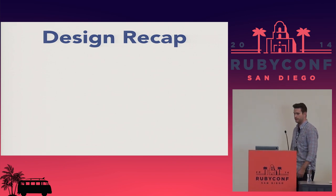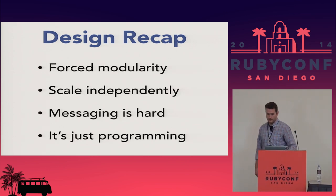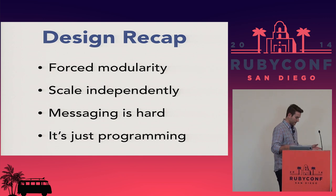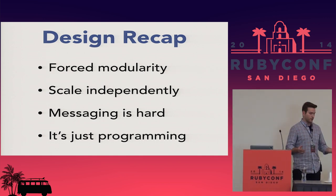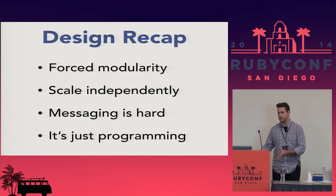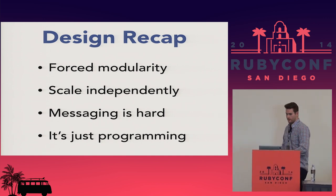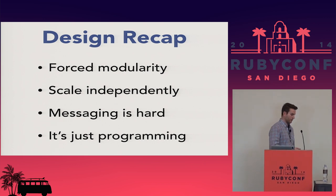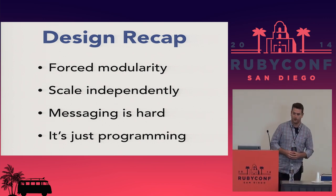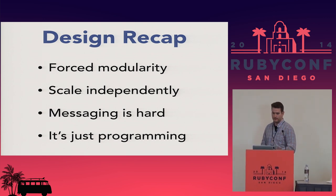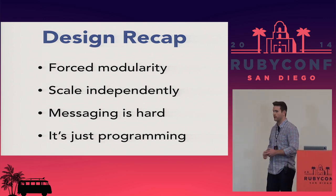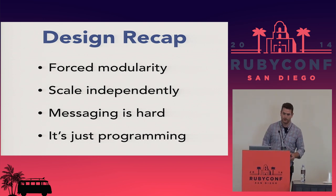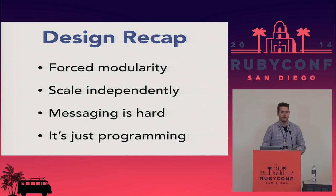To recap design: with concurrent design you're forced into modularity from the get-go, because if you don't design it well you're going to have issues. Looking for synchronous communication in an Elixir app is usually the first place you start when you're having problems. You can scale everything independently, which is why we like SOA so much. Messaging is really hard, so if you can do it in your programming language in memory, it's a lot easier. And the last thing is that it's just programming — when you write an application in Elixir or Erlang, you don't think 'this is web and this is everything else.' Web is just one little piece of your application.